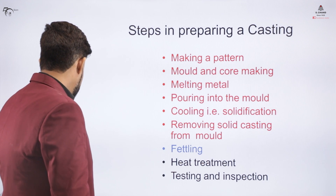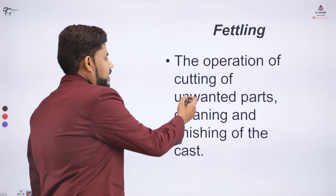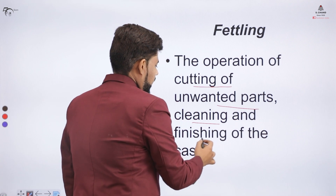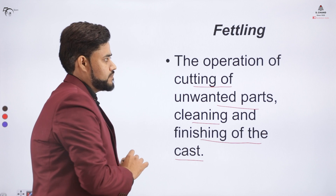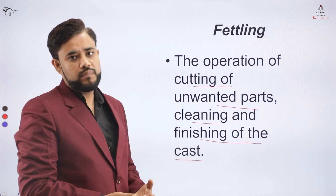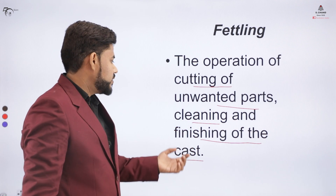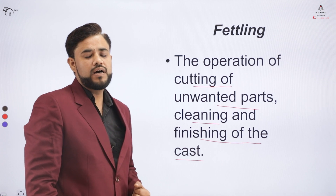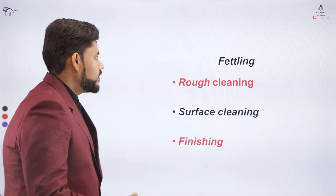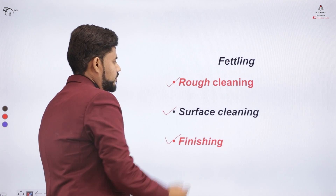What is the fettling process in casting? Fettling is basically an operation of cutting the unwanted parts, cleaning, and finishing of the final casting. In the fettling process, we remove unwanted parts, clean the final parts, or finish the parts on the final product. For the fettling operation, there are three operations to be performed: rough cleaning, surface cleaning, and finishing.